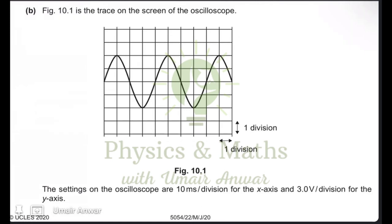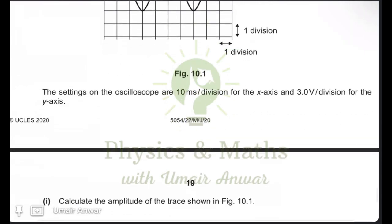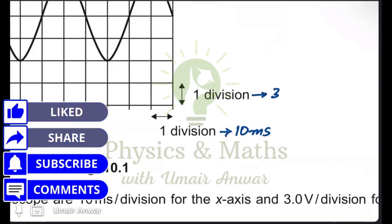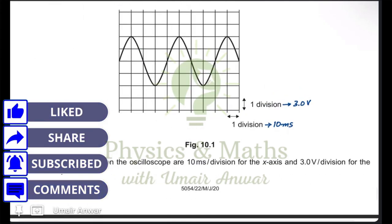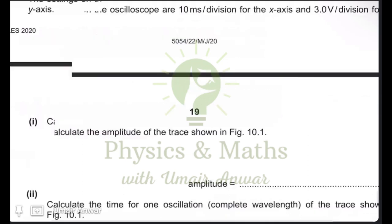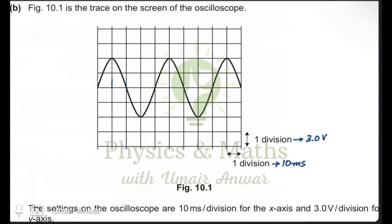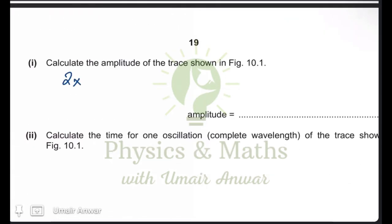Figure 10.1 shows the trace on the oscilloscope screen. The settings are 10 milliseconds per division on the x-axis and 3 volts per division on the y-axis. To calculate the amplitude of the trace, we can see it spans two divisions on the y-axis. Two divisions multiplied by 3.0 volts per division gives an amplitude of 6.0 volts.